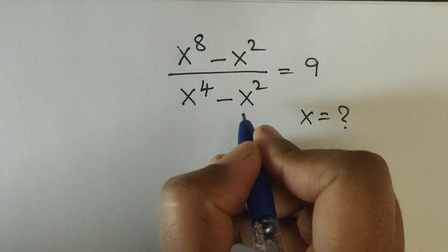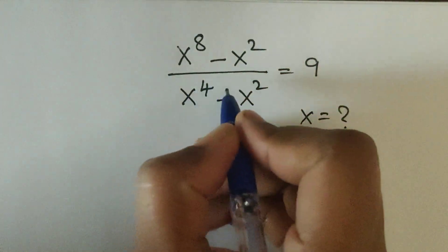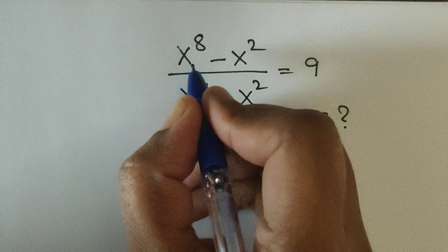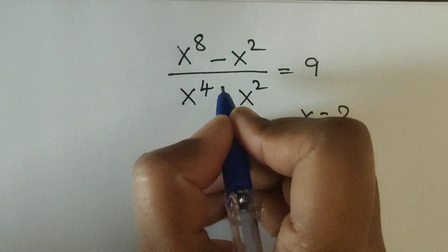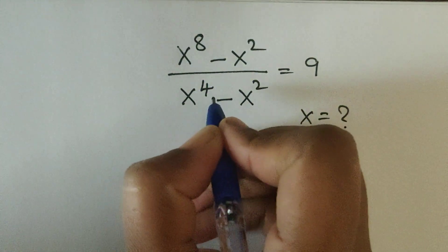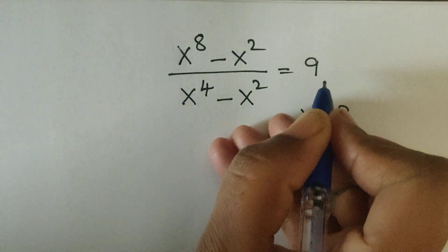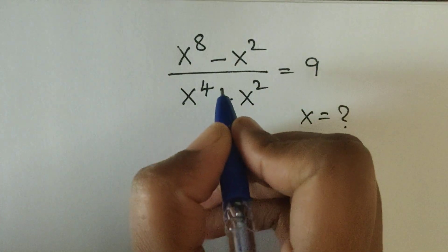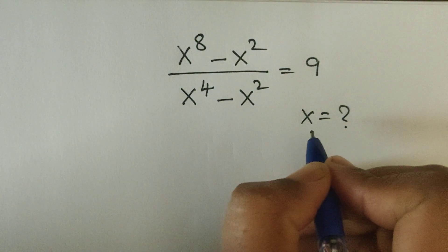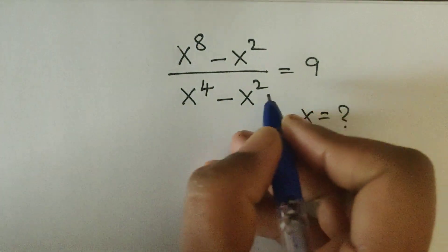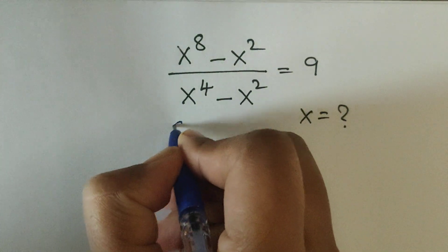Hello everyone, welcome back to our channel. Here we have one problem: x to the power of 8 minus x squared, divided by x to the power of 4 minus x squared, is equal to 9. In this problem we have to find the value of x. Let's see how we solve this.